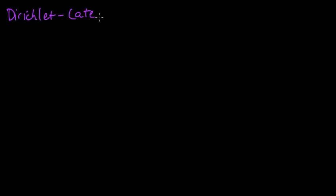Let's take a look at the Dirichlet Categorical Model. This is a great little model to cut your teeth on if you're just starting to understand Bayesian inference, because it's very useful and it's not too hard to understand.